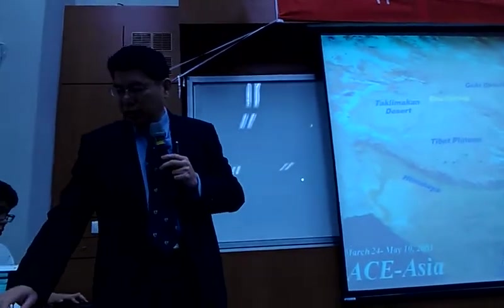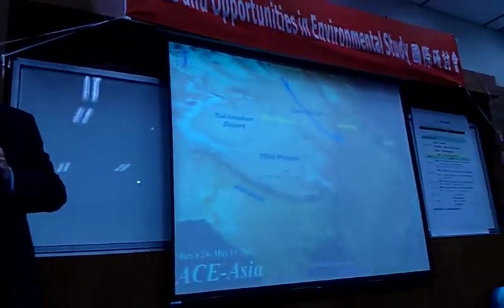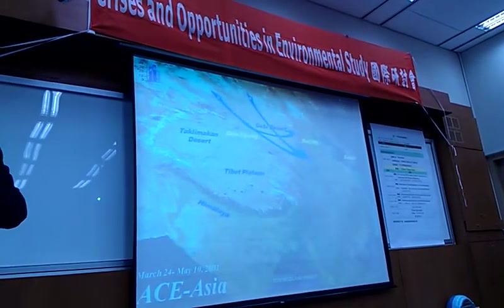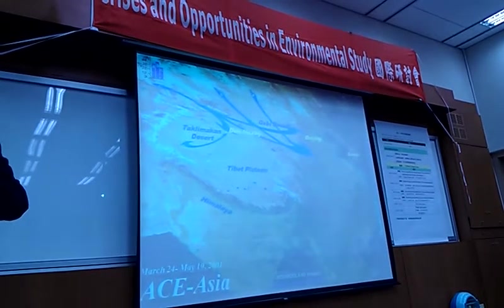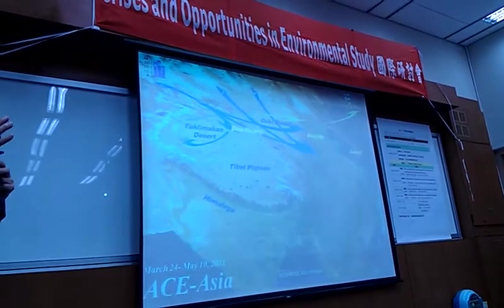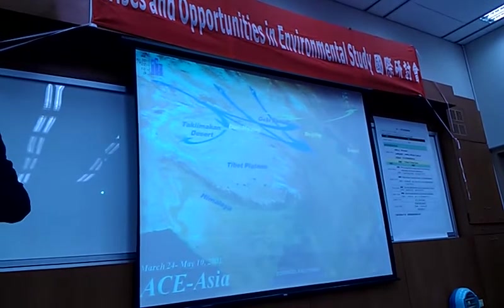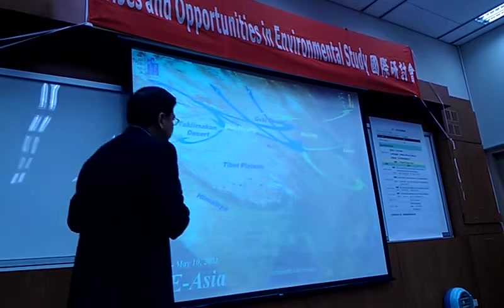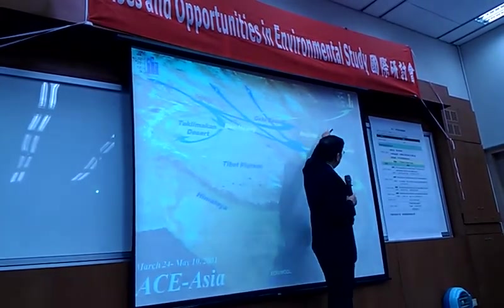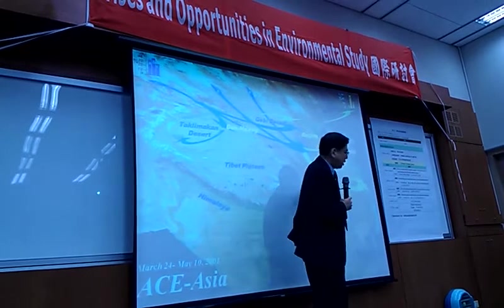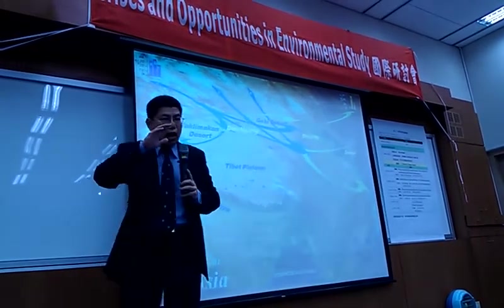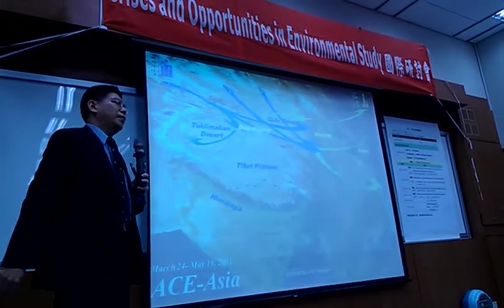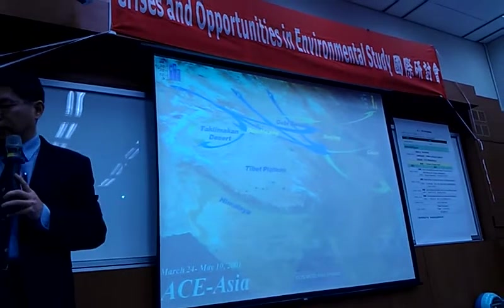Every year dust storms come through three ways. The first one goes through Beijing, then Seoul, or even further. The second is the North Road, the third is the Middle Road, and the last one goes through the Yangtze River, off the Yangtze River and comes down to Hong Kong and Taiwan. So that's a natural phenomenon.